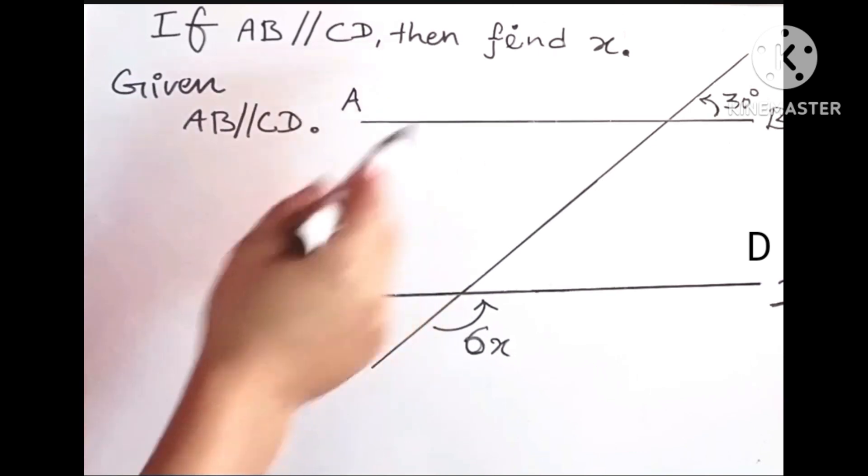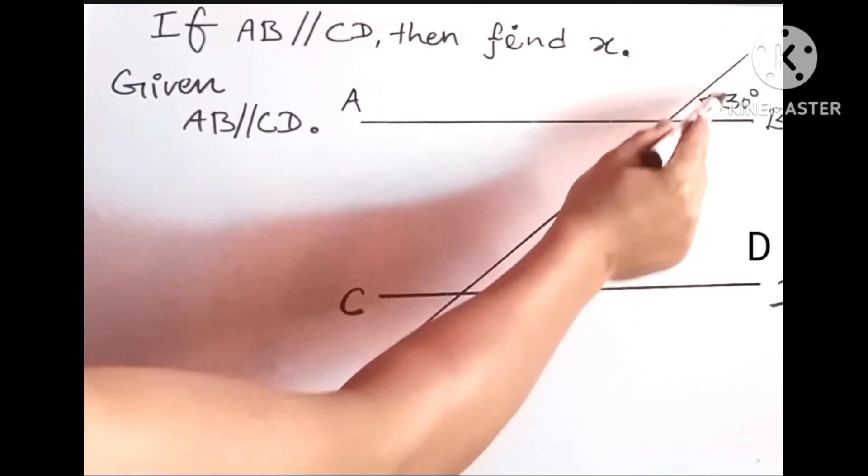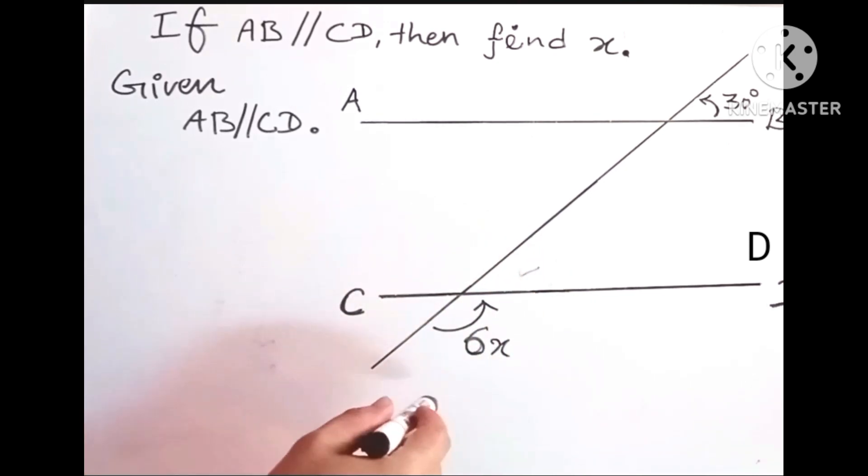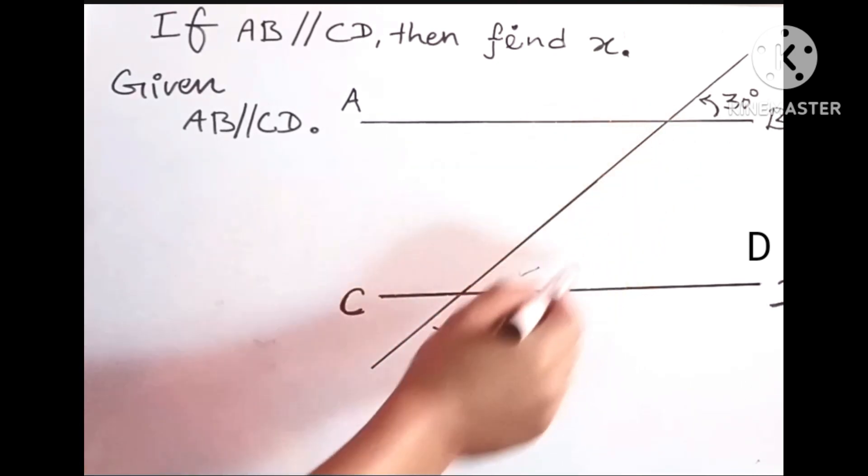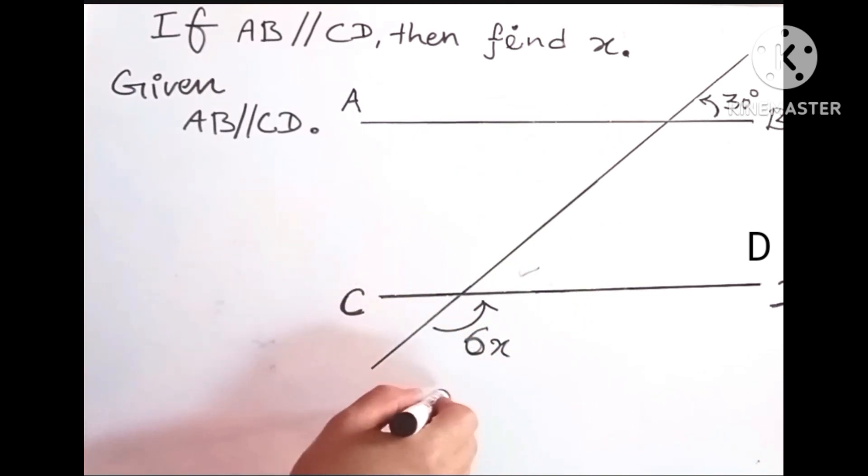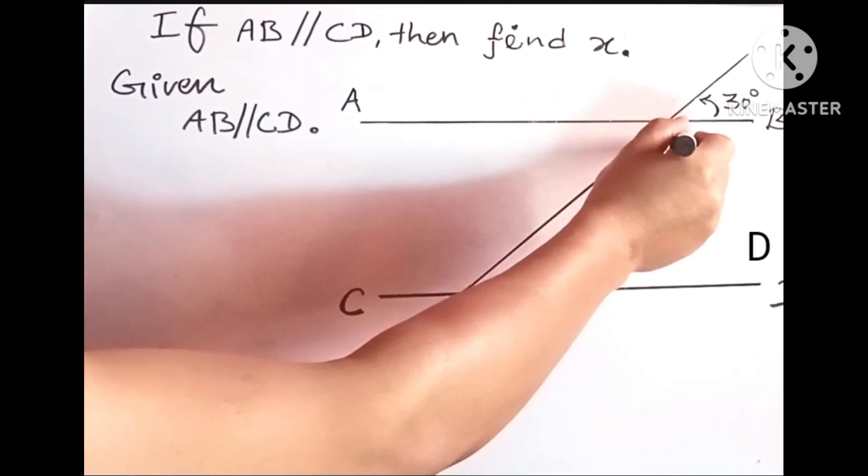In the figure, this angle and this angle are corresponding angles, and this angle and this 6x, these two angles are also corresponding angles. We know the values of corresponding angles are always equal.